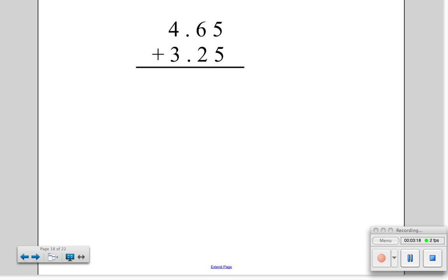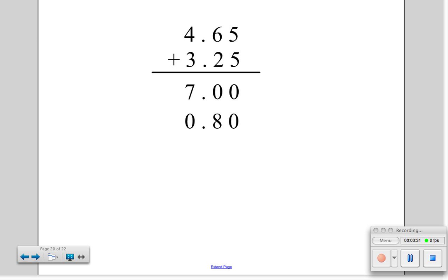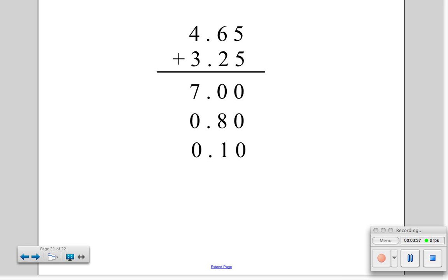If we're working with decimals, we get to use partial sums in the exact same way. So, we start out by adding 4 plus 3 is 7. Then, we add 6 tenths plus 2 tenths equals 8 tenths. And finally, we add 5 hundredths plus 5 hundredths, which is 1 tenth.